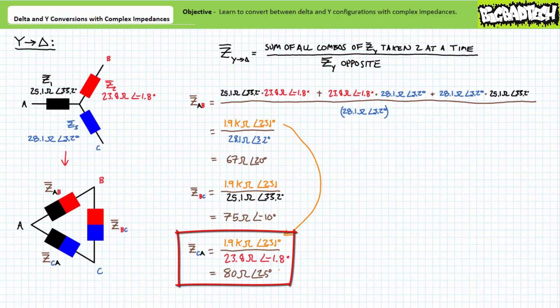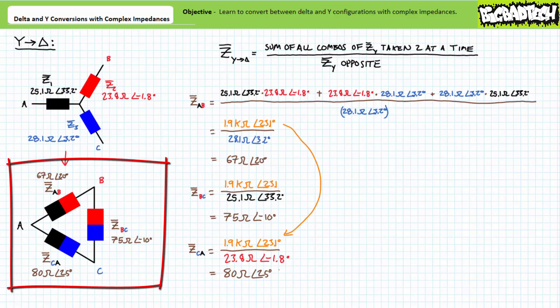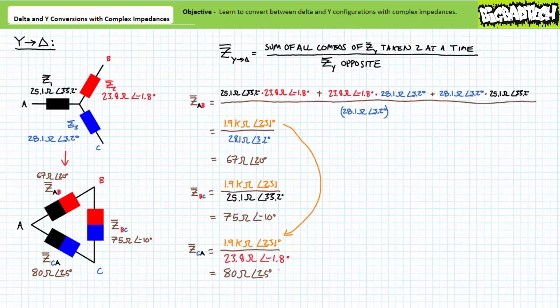Our equivalent delta configuration features Z-A-B at 67 ohms and 20 degrees between nodes A and B, Z-B-C at 75 ohms and negative 10 degrees between nodes B and C, and Z-C-A at 80 ohms and 25 degrees between nodes C and A. You should be extremely satisfied that this second conversion from Y to delta returned us to the original delta configuration we started with. I've got a reasonable degree of confidence our answers are correct.